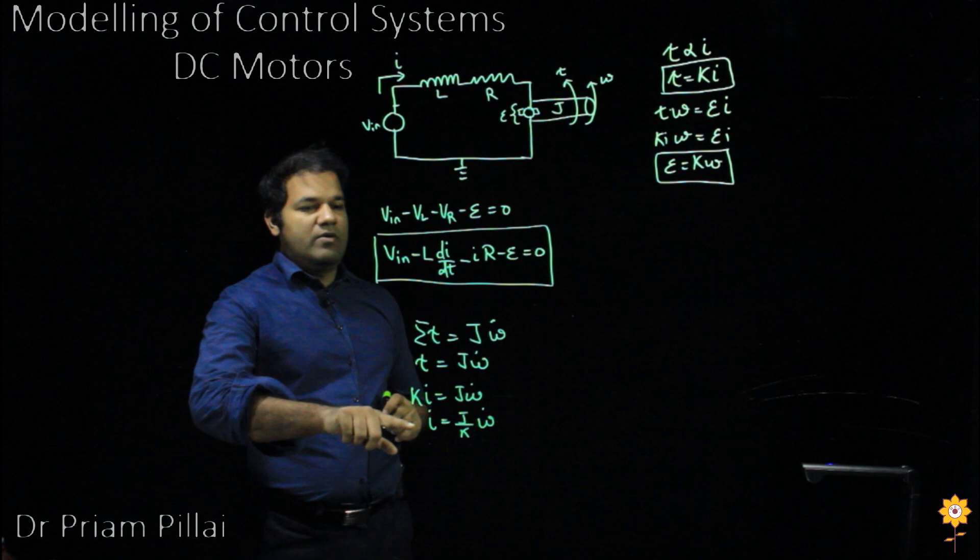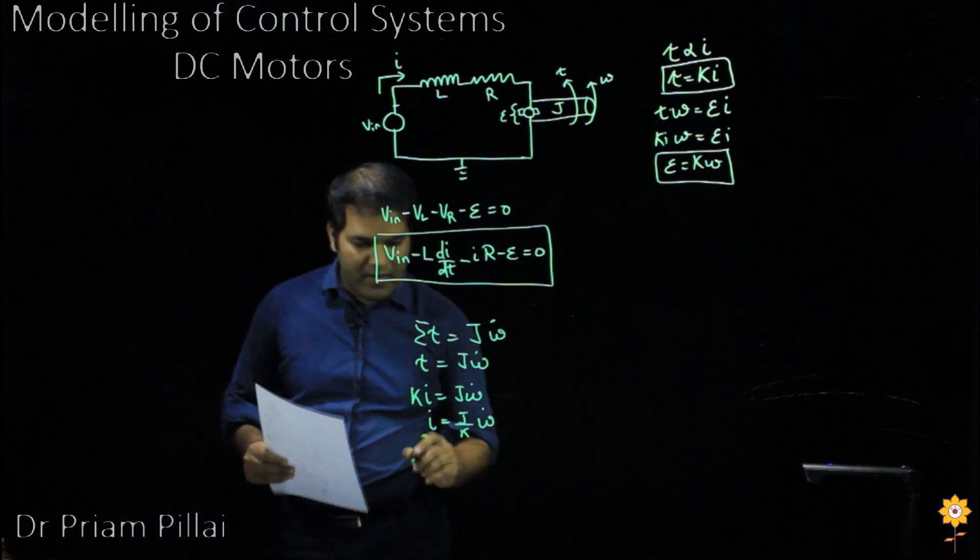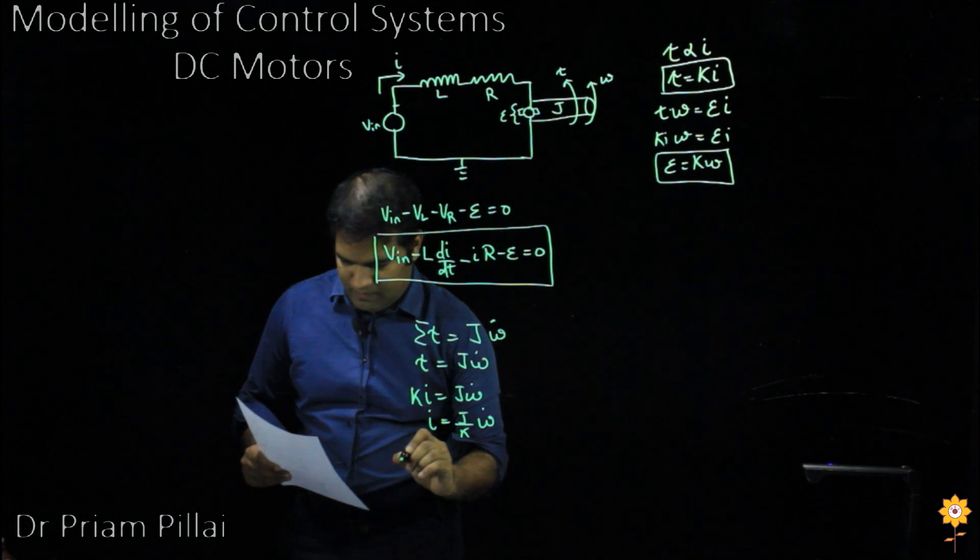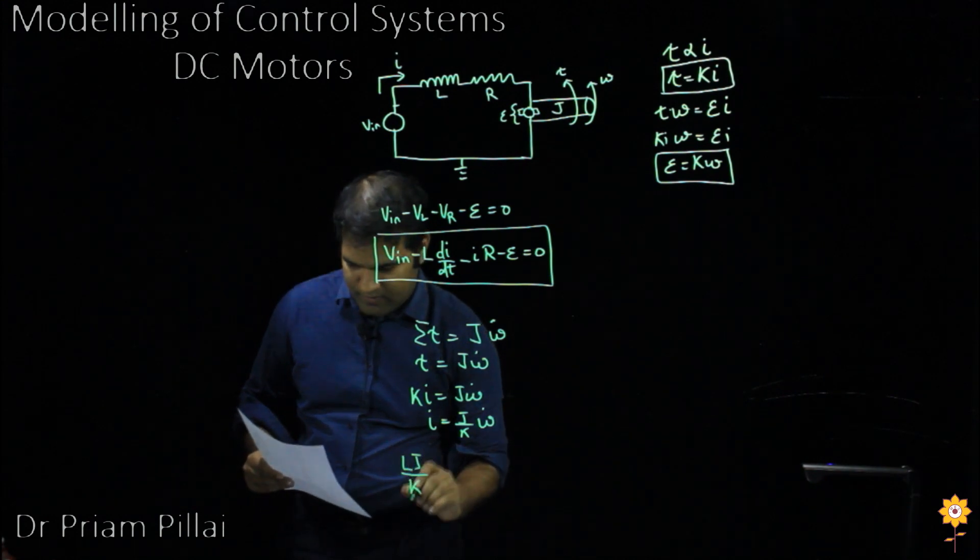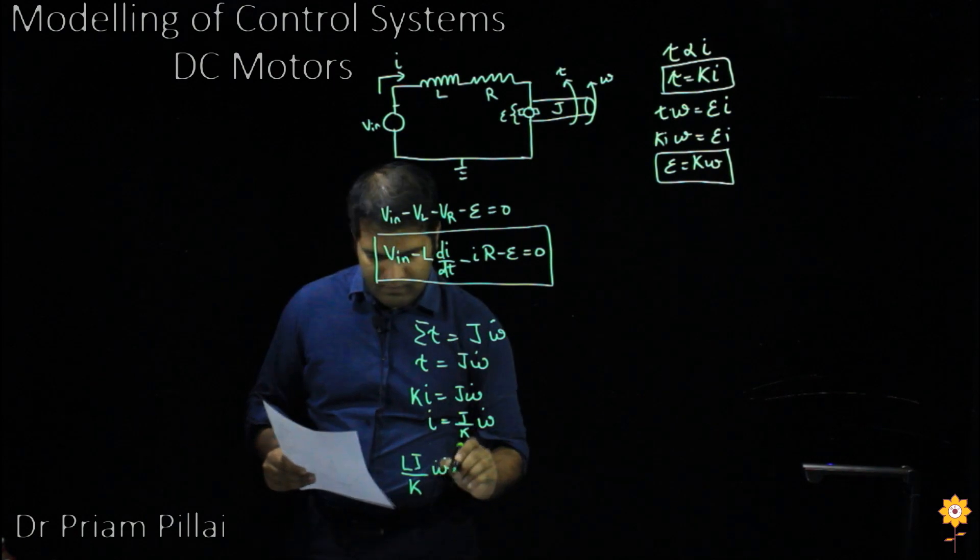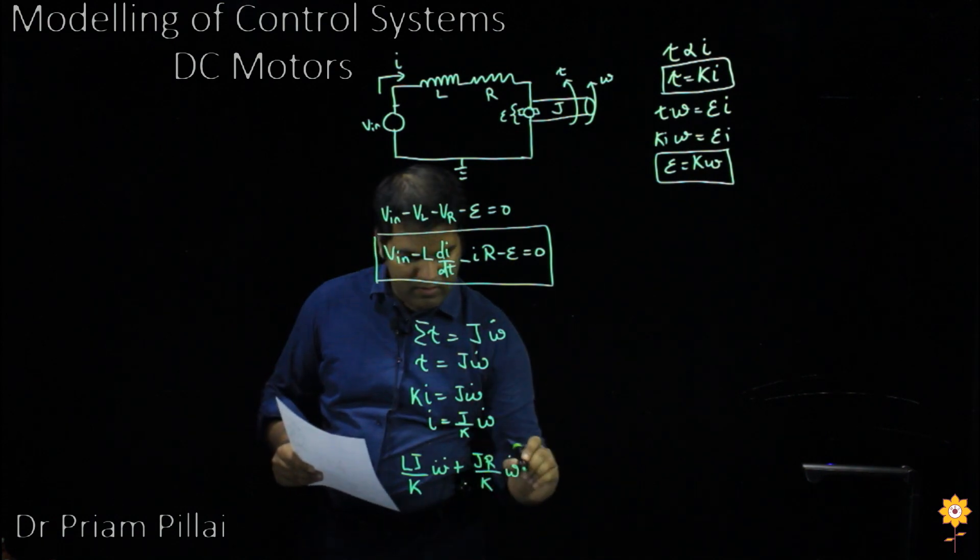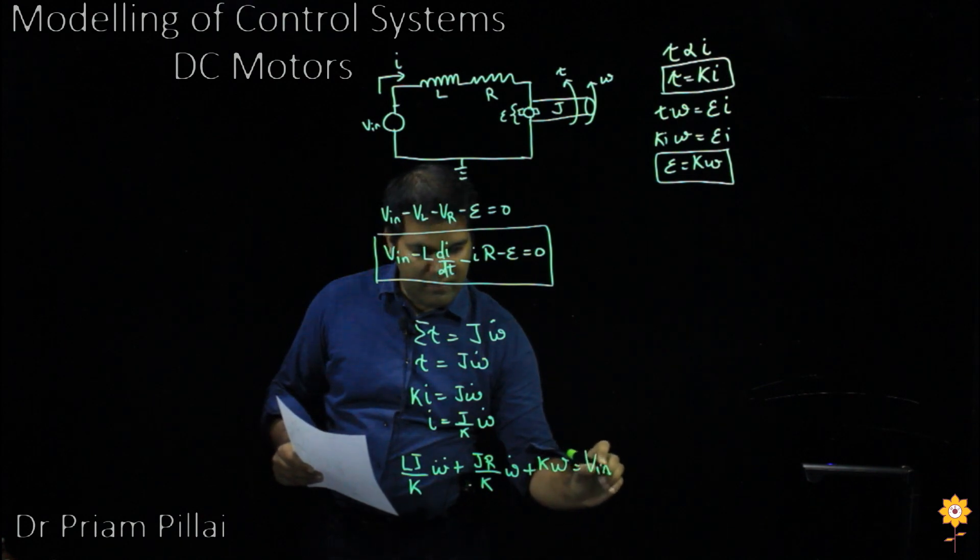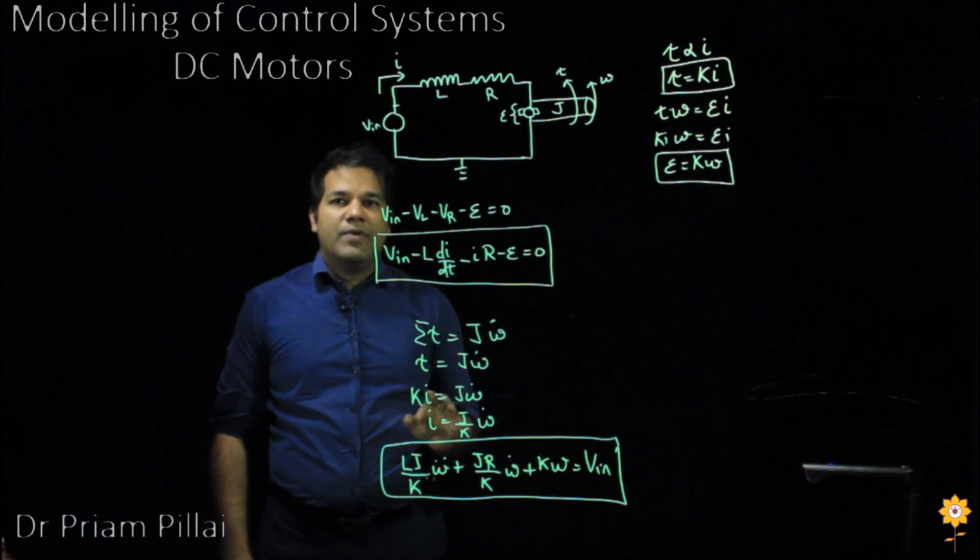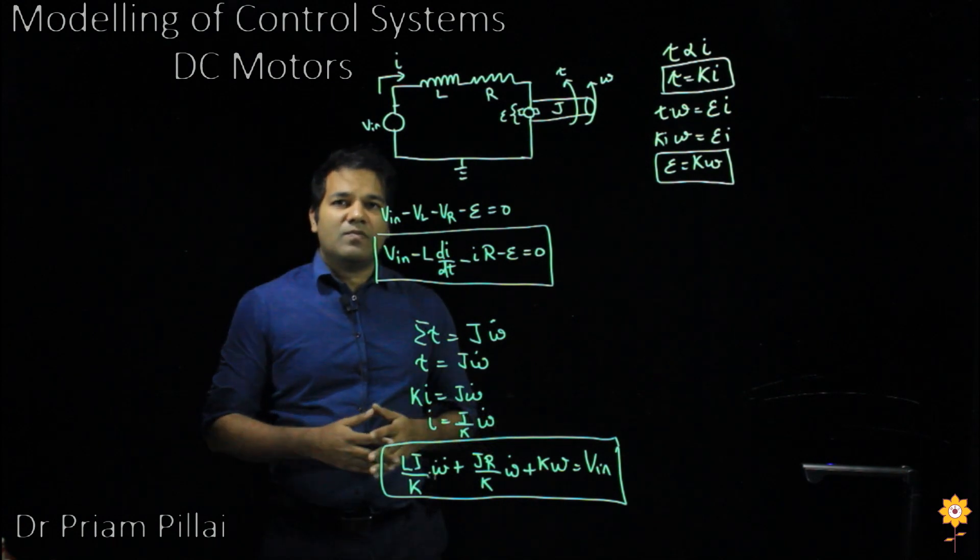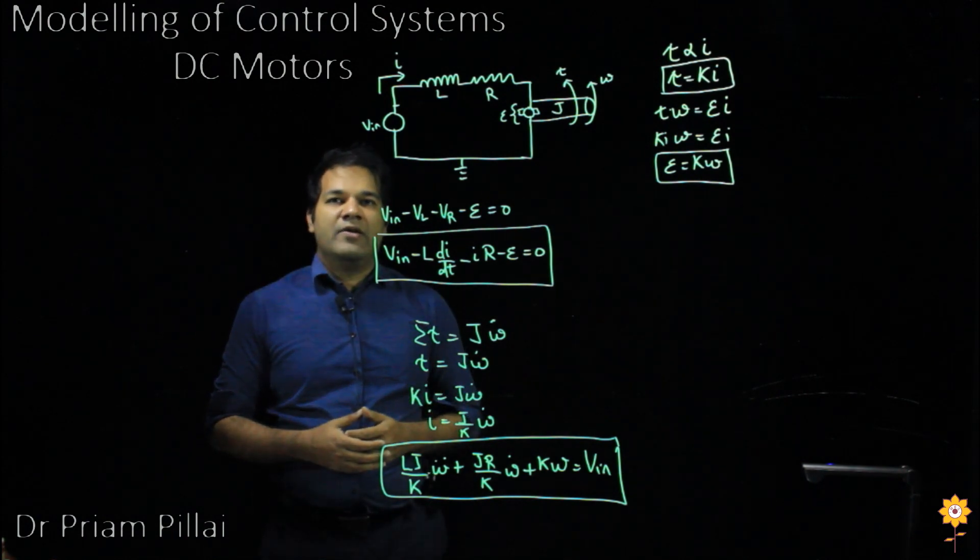We can then substitute this expression into our equation up here, and what we end up getting is L J over K omega double dot plus J R over K omega dot plus K omega equals V_in. Here we see another simple second order ordinary differential equation with constant coefficients, very similar to the ones we've already seen before. We will be able to solve this in the same ways and using the same techniques we will learn in this class.